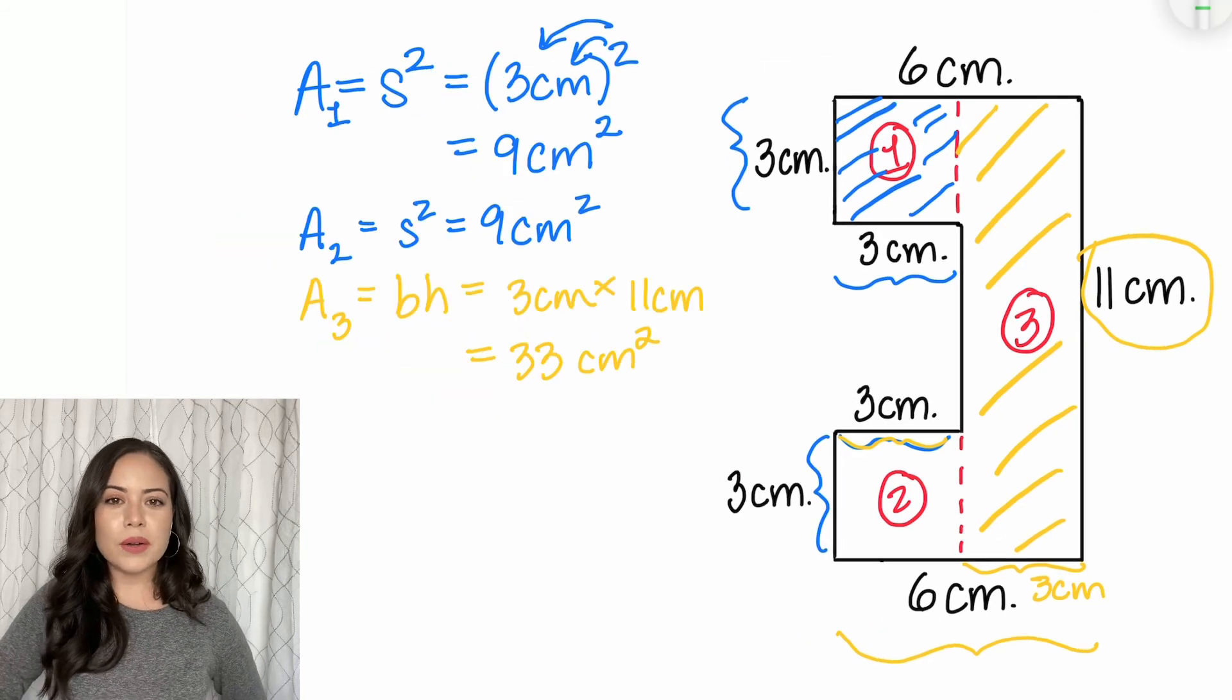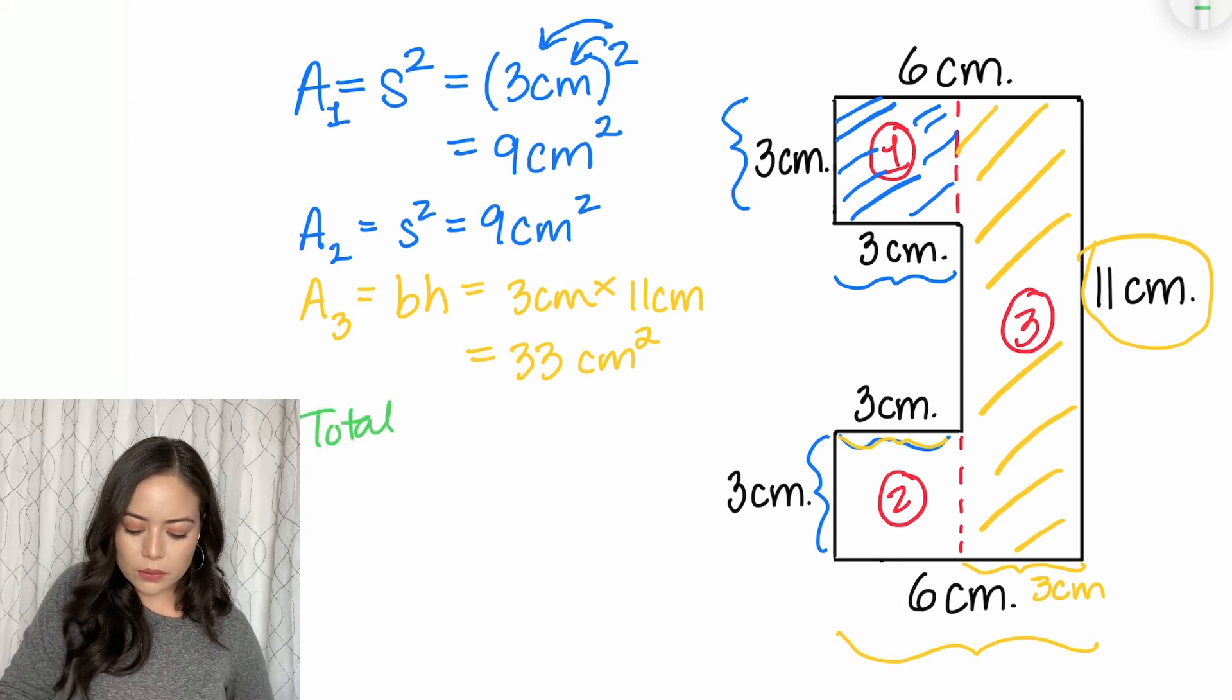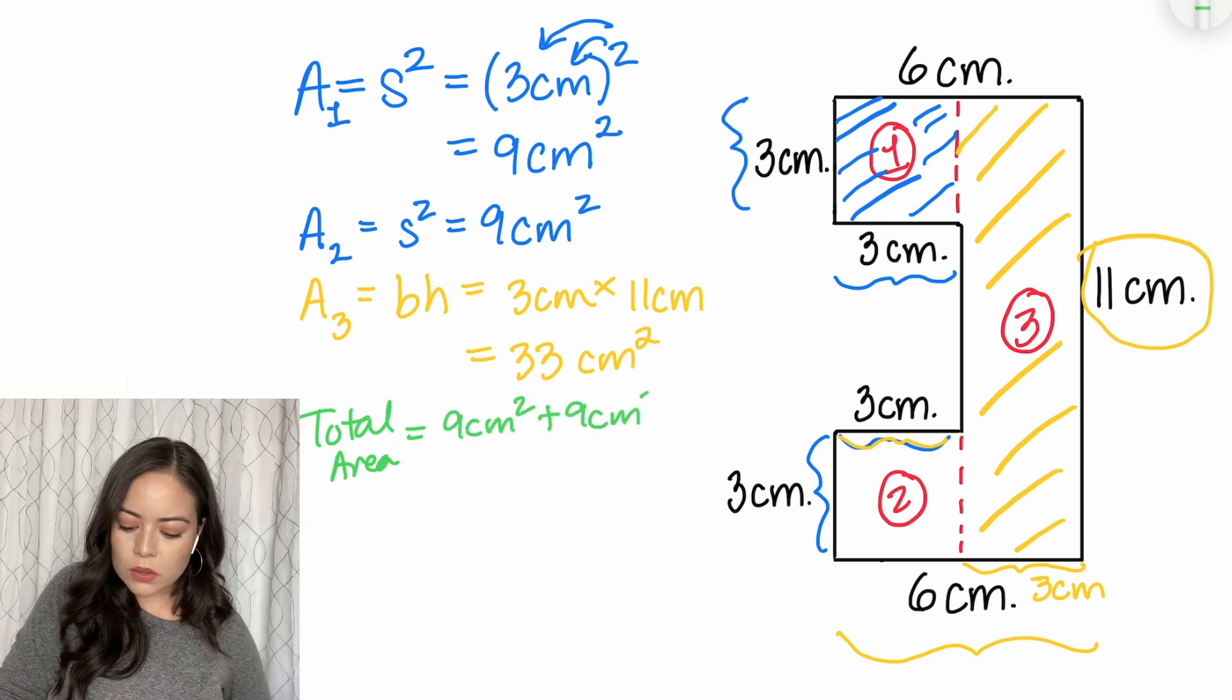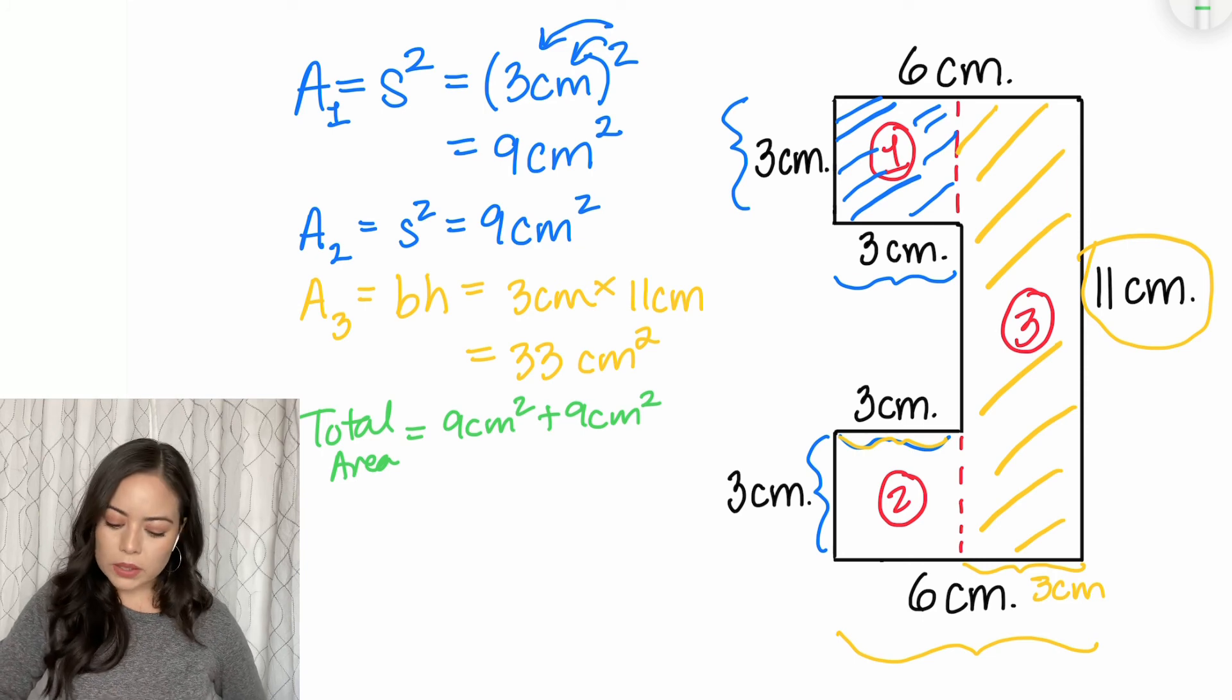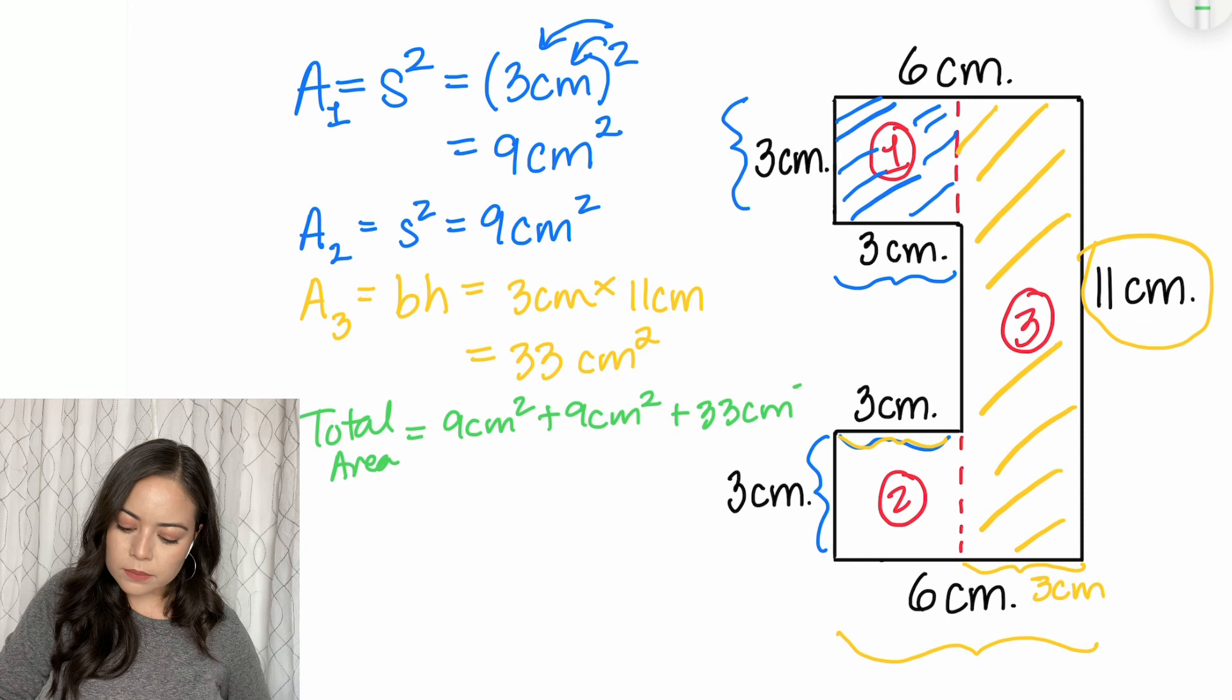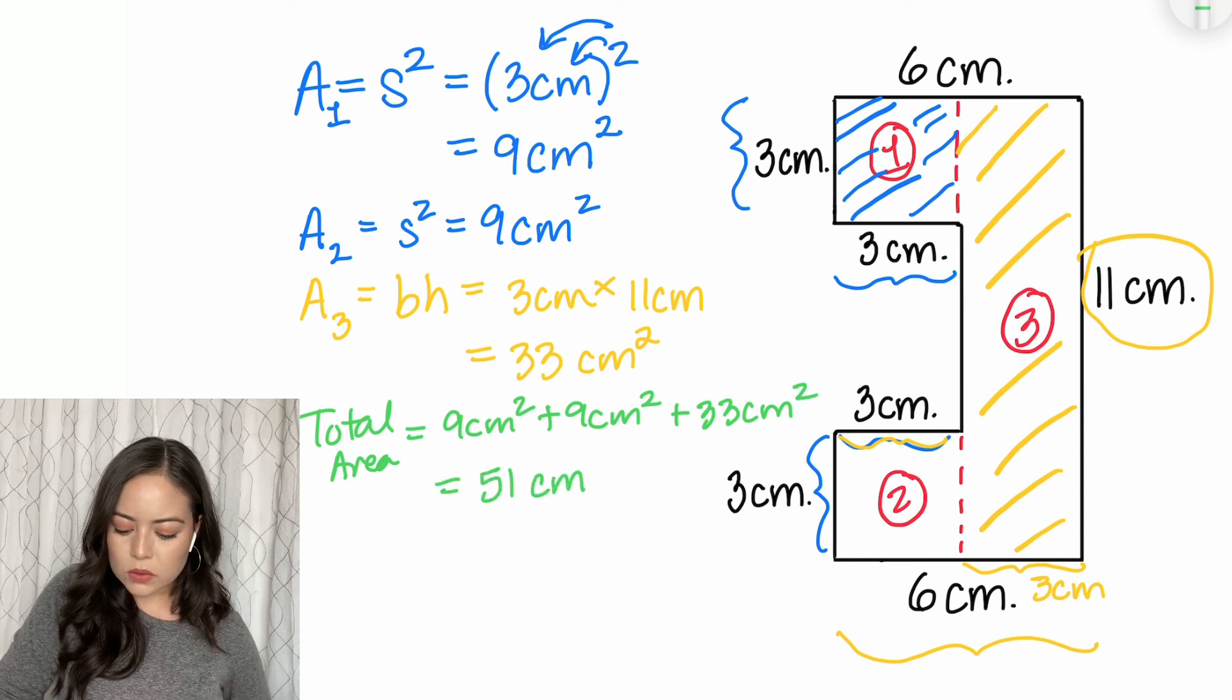Now to find the total area, we need to add up all those pieces together. So total area is equal to nine centimeters squared plus nine centimeters squared. Those are the areas of the two smaller squares, plus the rectangle, 33 centimeters squared, leaving us with 51 centimeters squared.